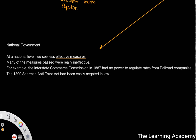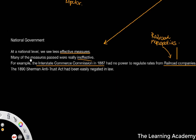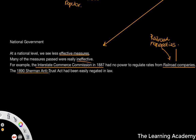Many of the national measures passed were really ineffective. For example, the Interstate Commerce Commission in 1887 had no power to regulate rates from railroad companies. We also have railroad monopolies to consider. There was also the Sherman Antitrust Act, effectively proposed legislation to try and break up some of these monopolies, but it was easily negated in law. There were a number of legal loopholes available for monopolies to get around this antitrust legislation.